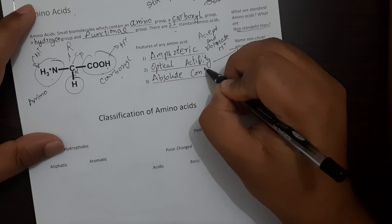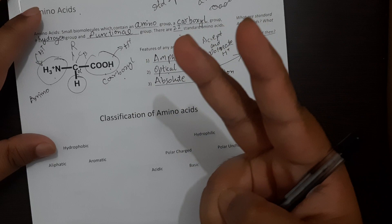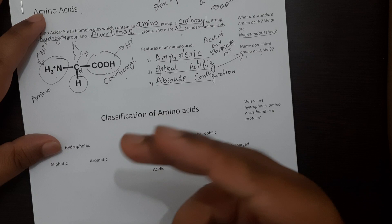Finally the third important feature of amino acid is their absolute configuration. So absolute configuration means every amino acid can form two non-superimposable mirror images of each other. That means that they are enantiomers of each other.